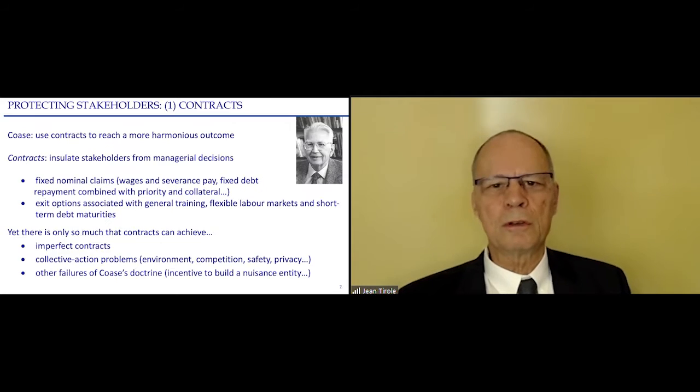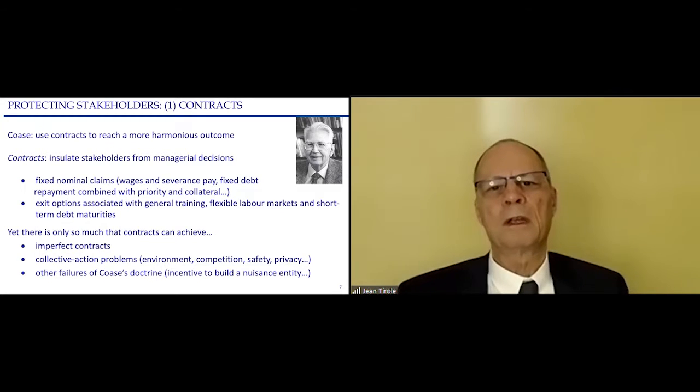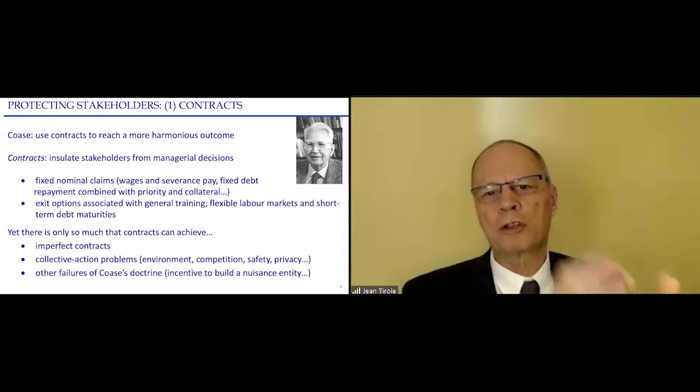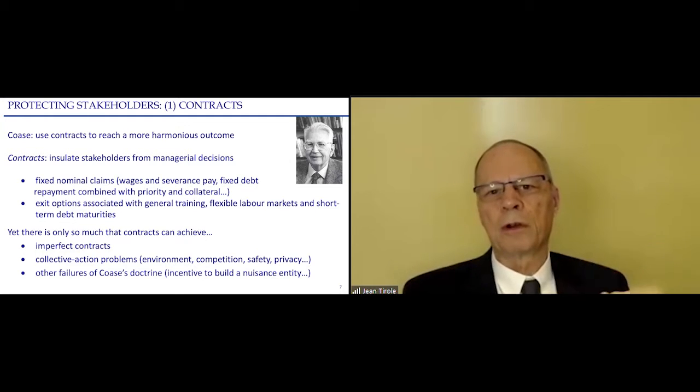Fine to maximize profit, except that there are externalities on stakeholders. Now, there are two reactions to externalities. The first reaction is due to, say, Ronald Coase, who is another Nobel laureate, and he said we should write contracts. We should write contracts which are going to insulate the stakeholders from the decisions of management and the shareholders. There are ways to do that, and they are used to some extent. For example, a nominal fixed claim—a fixed wage for workers, a severance pay when the worker is fired.